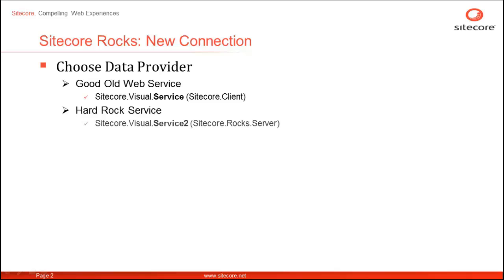The hardrock service, named as 'service2', inherits from the good old web service and extends its capabilities by adding the possibility to invoke execute methods in classes in the namespace Sitecore.rocks.server.request. The hardrock service lives in Sitecore.rocks.server assembly at the Sitecore.visual namespace.